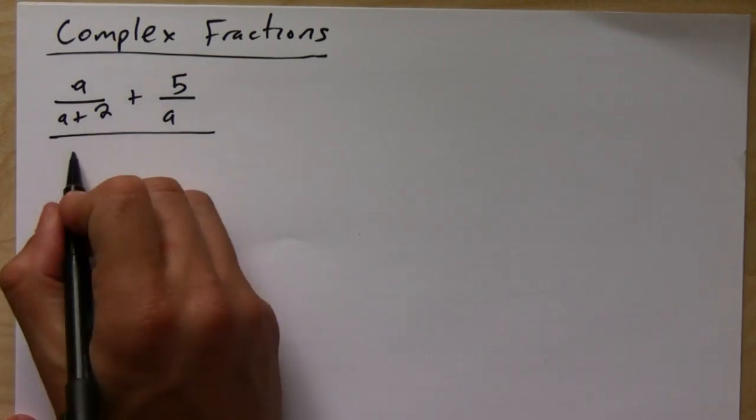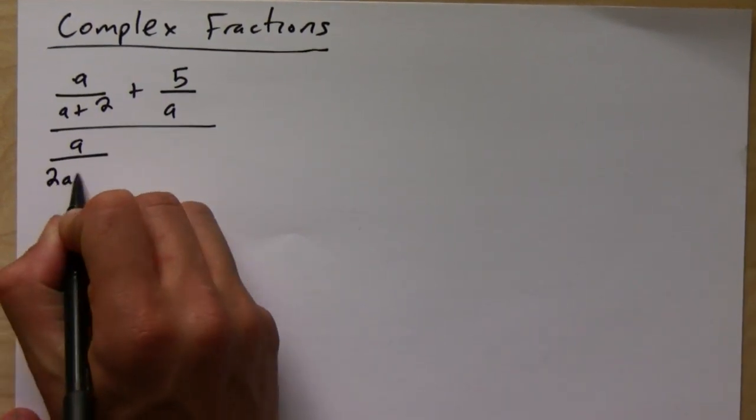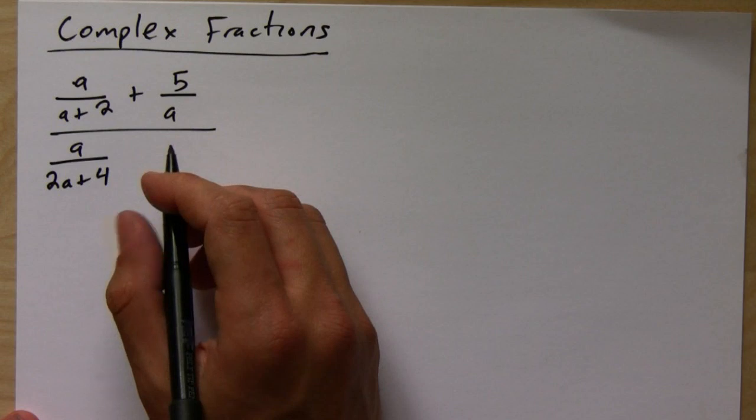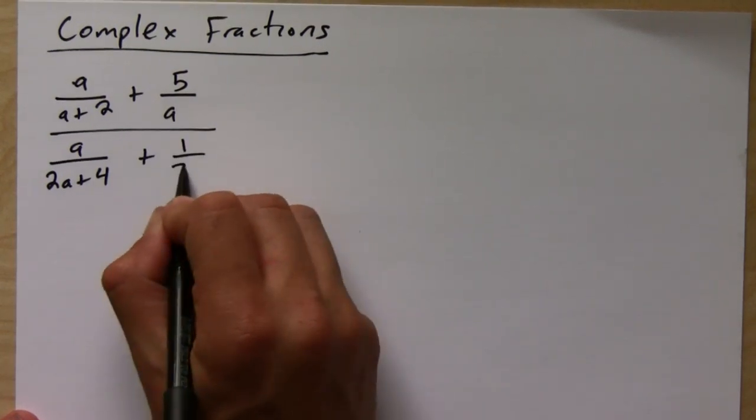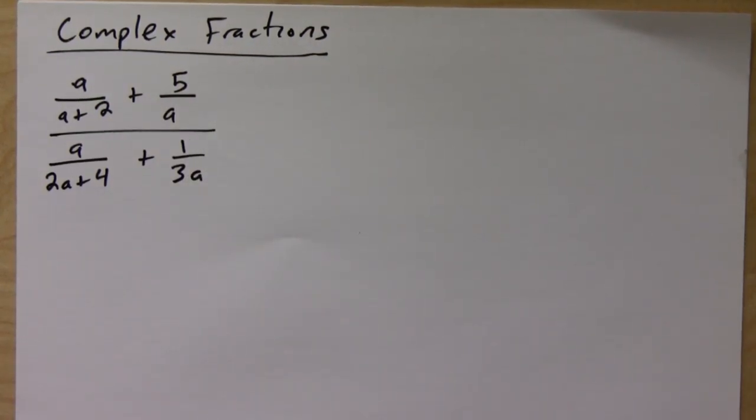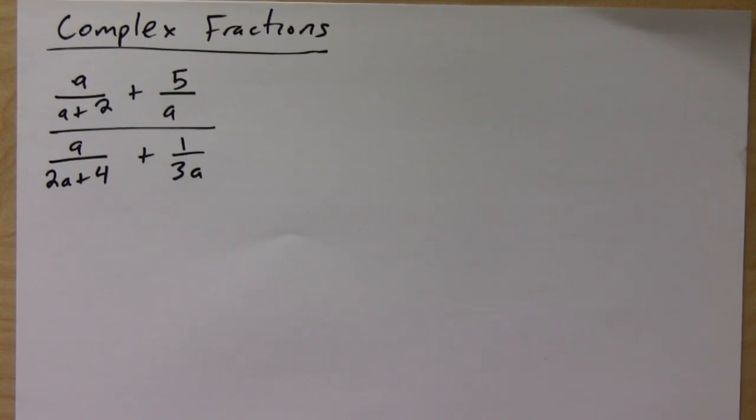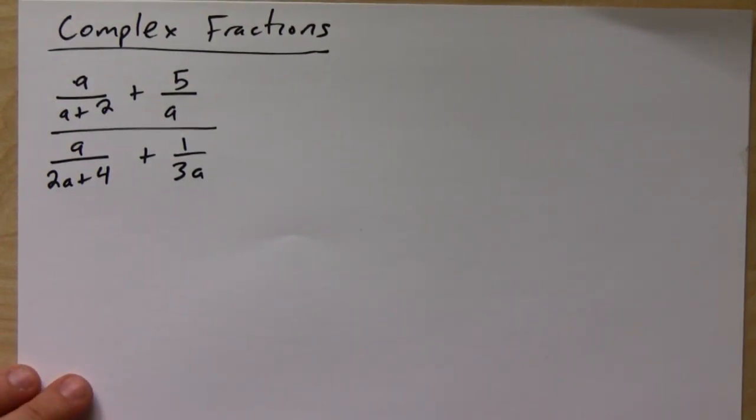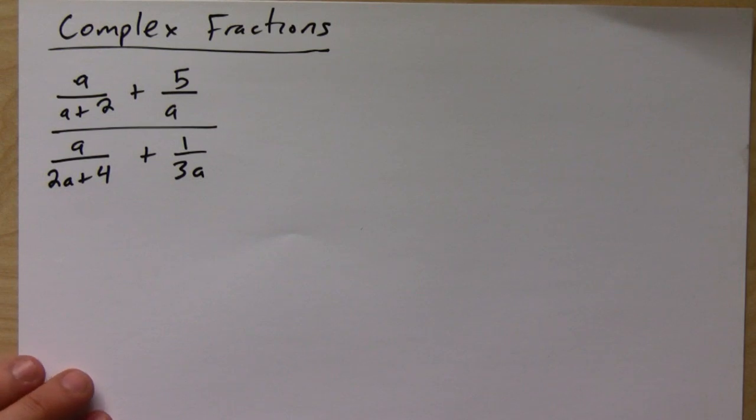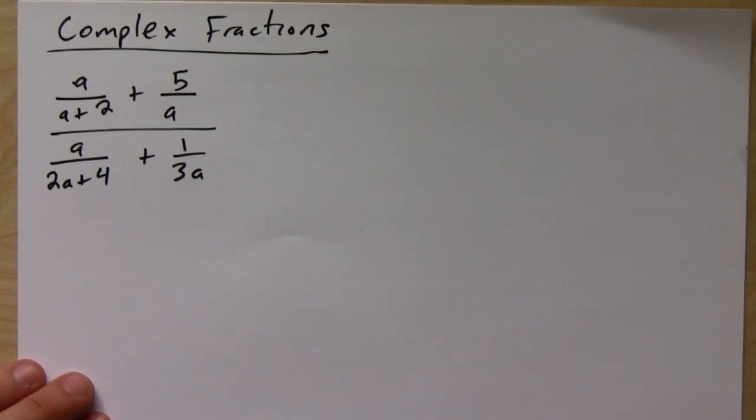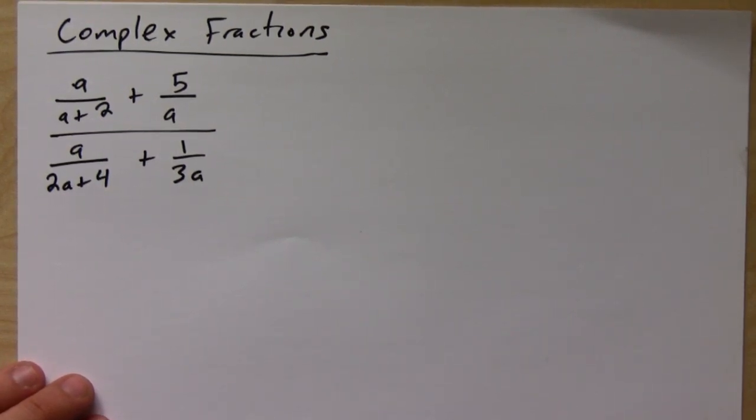Now there are a couple of ways to do this, but I'll just show you guys one way. And if you already have a way, well you can do that. Okay, so the first thing we need to do is combine the top into one fraction and the bottom into one fraction, so you need the least common denominator of each one.